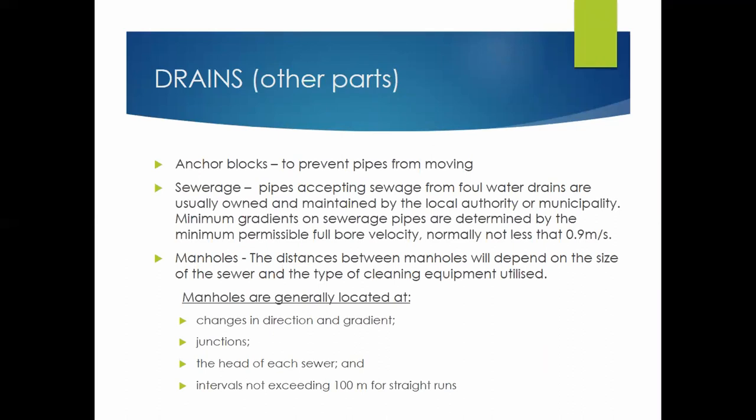Going further into the parts of a drain: anchor blocks prevent the pipes from moving. Manholes are generally located where the pipe changes in direction or gradient, at junctions, at the head of each sewer, and at intervals not exceeding 100 meters for straight runs.